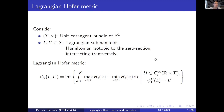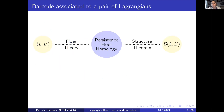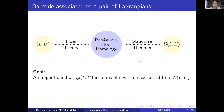Now about persistence Floer homology: this is the general pipeline. We take a pair of Lagrangians L and L' and apply Floer theory, which allows us to construct a so-called persistence Floer homology, which is a persistence module. The structure theorem for persistence modules of finite type allows us to extract the barcode, which is a multi-set of intervals. The goal of this talk is to find an upper bound for Hofer's metric between L and L' in terms of invariants extracted from the barcode.